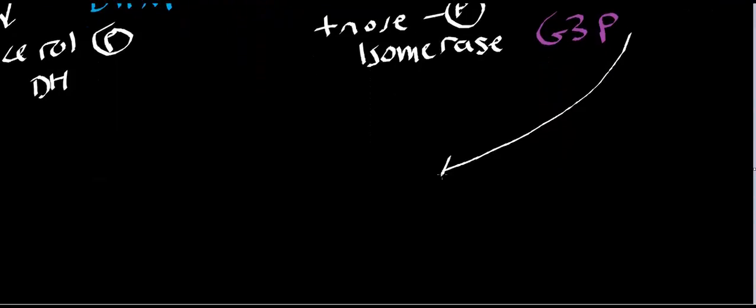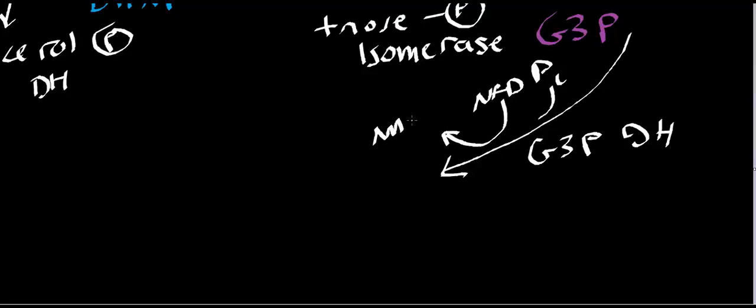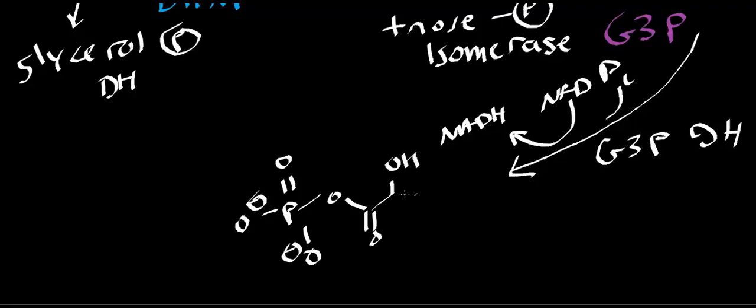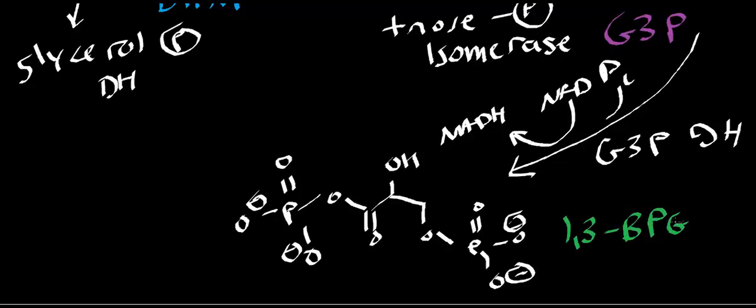If you remember, glyceraldehyde 3-phosphate can go into glycolysis at the level of this enzyme, and that's G3P dehydrogenase. Recall that it attaches a phosphate onto it and also puts in an NAD+, and you get the first NADH out of glycolysis. If you remember what that generates, it generates 1,3-bisphosphoglycerate. We can abbreviate that 1,3-BPG, and of course then that goes on to pyruvate.